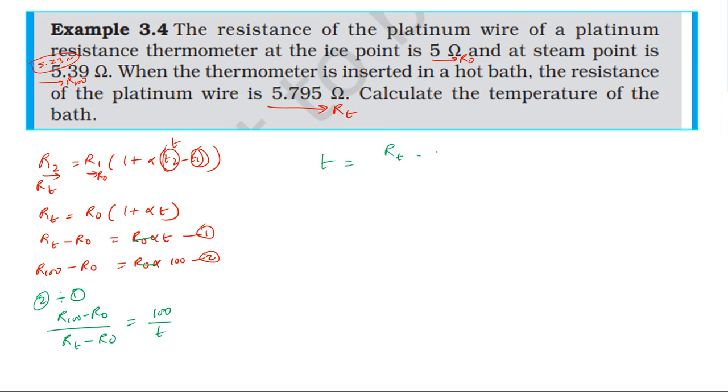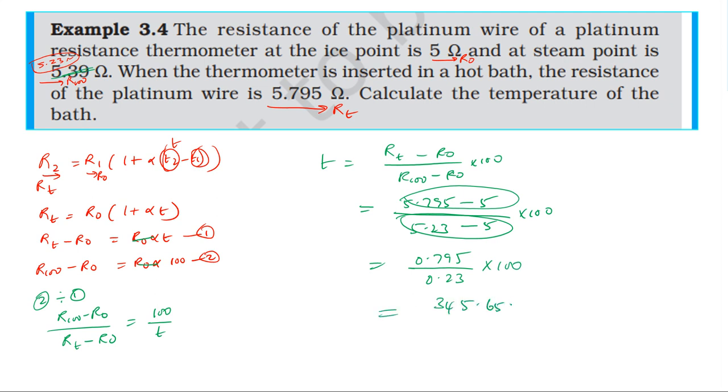Substituting the values: t = 100 × (5.795 - 5)/(5.39 - 5) = 100 × 0.795/0.39 = 204 degrees centigrade approximately. So when the platinum wire resistance is 5.795 ohm, the temperature is approximately 204 degrees centigrade.